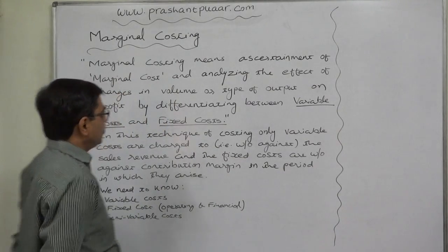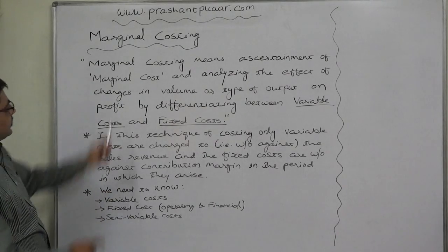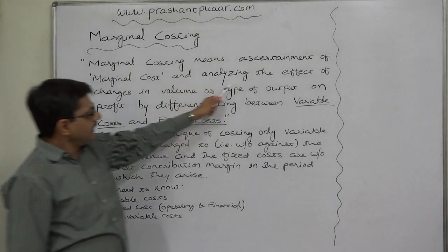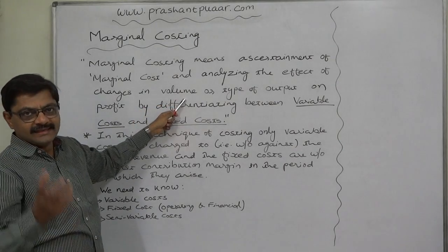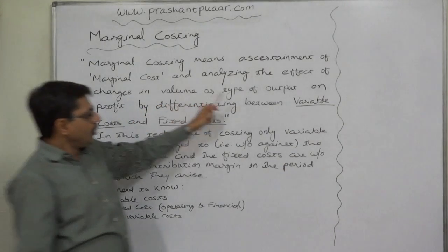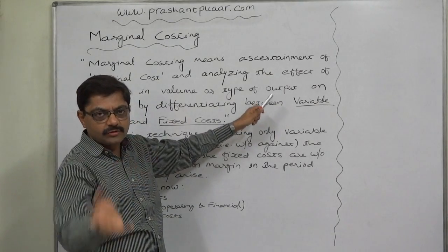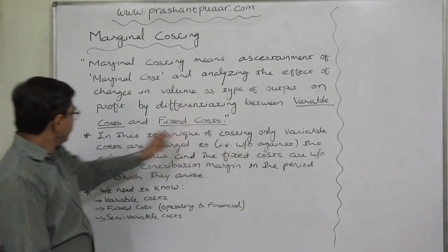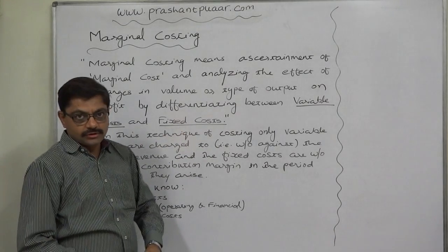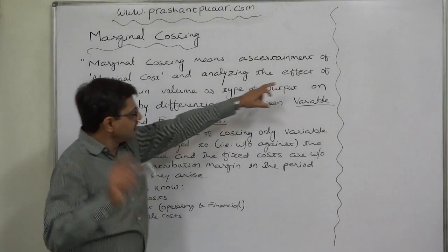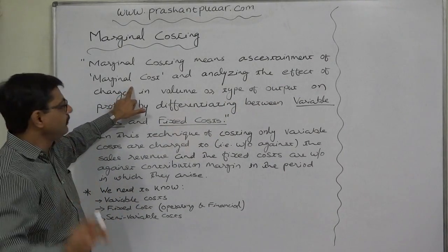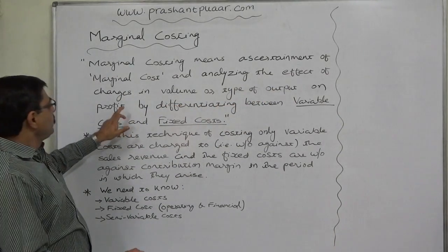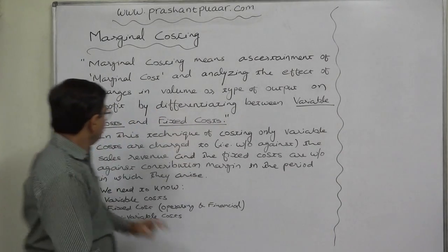What is marginal costing? Marginal costing means ascertainment of marginal cost and analyzing the effect of changes in volume — that is, sales or production quantity — or type of output on profit, by differentiating between variable cost and fixed cost. So first we determine the marginal cost and analyze the effect of changes in volume or type of output on profit by differentiating between variable cost and fixed cost.